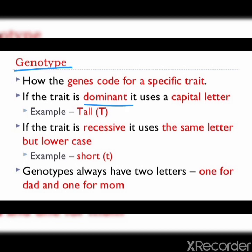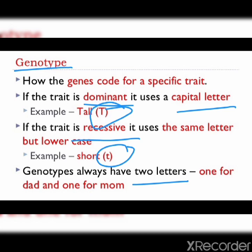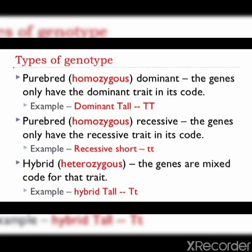If the trait is dominant it uses a capital letter — for example, capital T represents a tall plant. If the trait is recessive it uses the same letter but in small — for example, small t represents a dwarf plant, which is recessive. Genotypes always have two letters. Somatic or vegetative cells contain two alleles for every gene, with one allele provided by each parent.